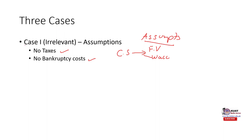We have the first case, where we take quite an idealistic situation. We say that there are no taxes in the world and there is no bankruptcy cost — meaning no matter how much debt is raised, the firm would not face bankruptcy and there would be no bankruptcy cost attached to it. We call this the irrelevance theory. The assumptions are: no taxes and no bankruptcy cost.